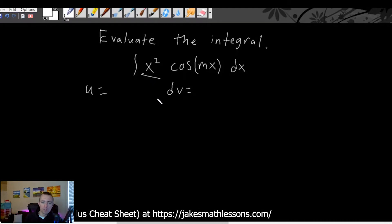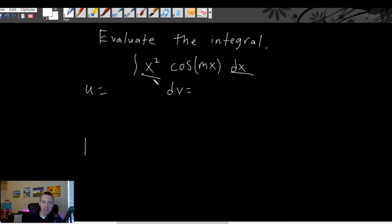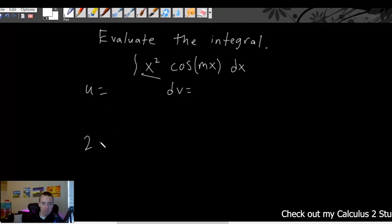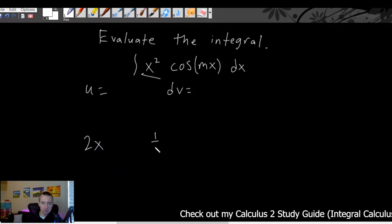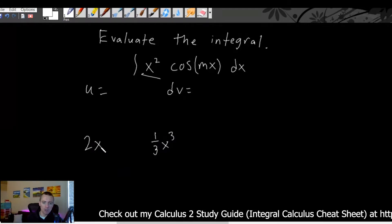Looking at the x squared term — the derivative of x squared using the power rule is 2x, and the antiderivative of x squared using the power rule is one-third x cubed. So we're either lowering or raising our power. Usually, if you have a power function or polynomial as one of your options for u versus dv, you typically want to take the derivative of it.